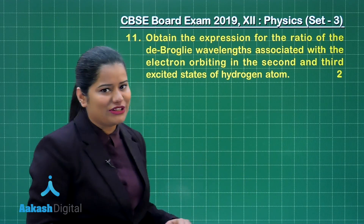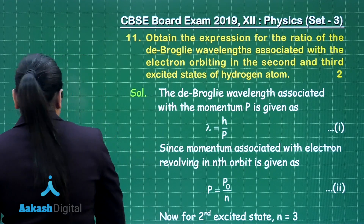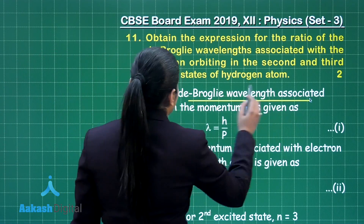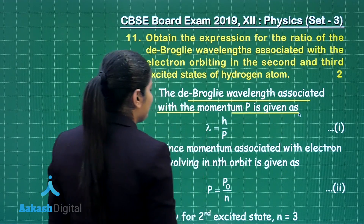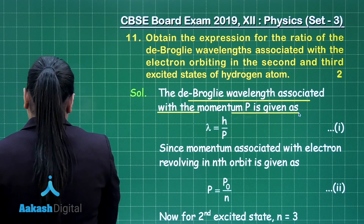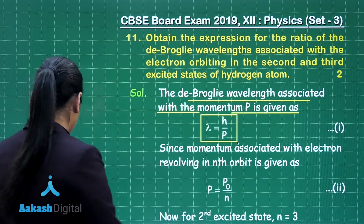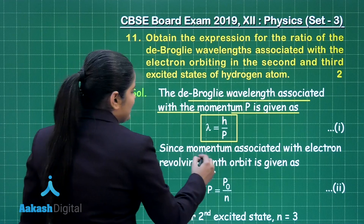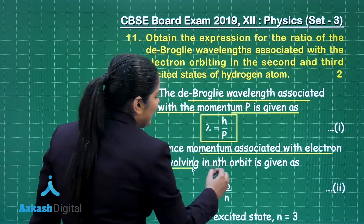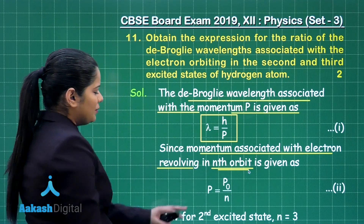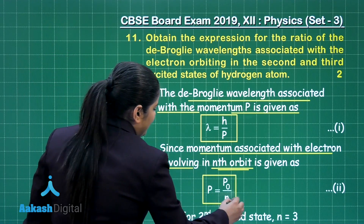Let us look at the solution for this question. We know that the de Broglie wavelength associated with momentum p is given by the expression lambda equals h by p. The momentum associated with the electron orbiting in the nth orbit is given by p naught by n.